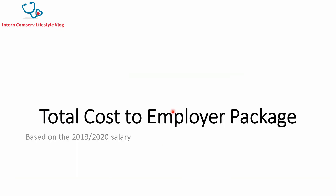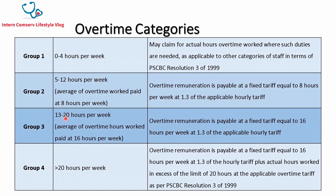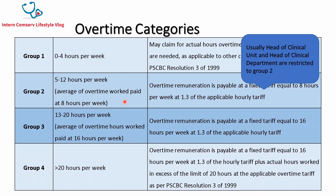The salary is based on three aspects. The total cost to employer we are discussing is based on the 2019–2020 salary, and there's overtime and rural allowances. As a production grade specialist — specialist grade one, two and three — you will be working 13 to 20 hours of overtime per week. As a supervisory specialist, being either head of clinical unit or head of clinical department, you are restricted to working five to 12 hours per week and then paid an average of eight hours per week.